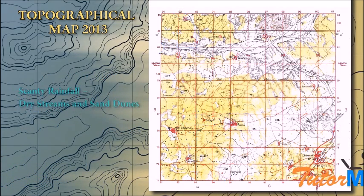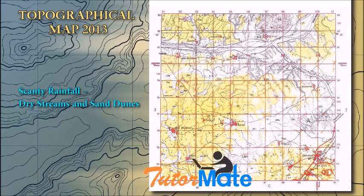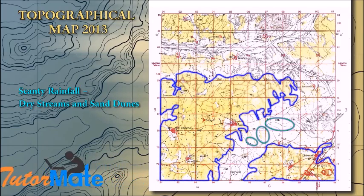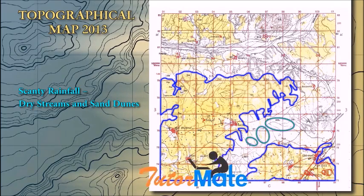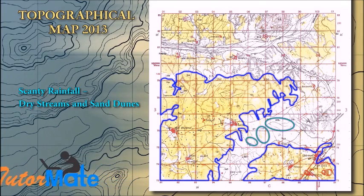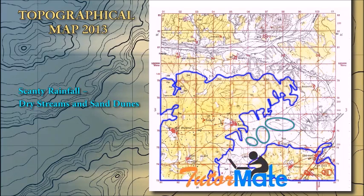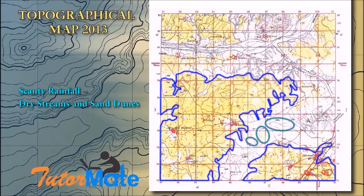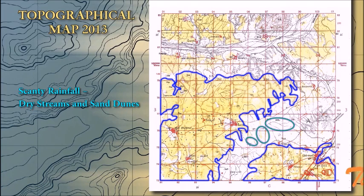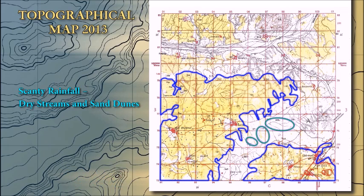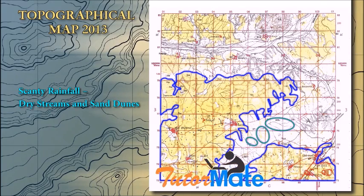The next question: what type of rainfall is experienced in the region shown in the map extract? Look at the entire map — you can see many sand dunes in the southern part, while the northern part has more yellow areas. So the rainfall is scanty in the southern part and seasonal in the northern part. To justify: for scanty rainfall, your evidence is sand dunes; for seasonal rainfall, your evidence is dry streams.